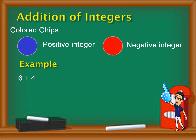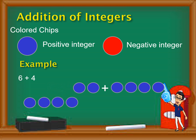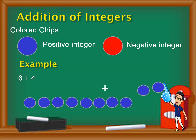How about with positive? Let's have six plus four. We use blue chips — one, two, three, four, five, six to represent positive six, plus one, two, three, four to represent positive four. Again, there are no zero pairs, so we just count: one, two, three, four, five, six, seven, eight, nine, ten. Therefore, six plus four is equal to ten.